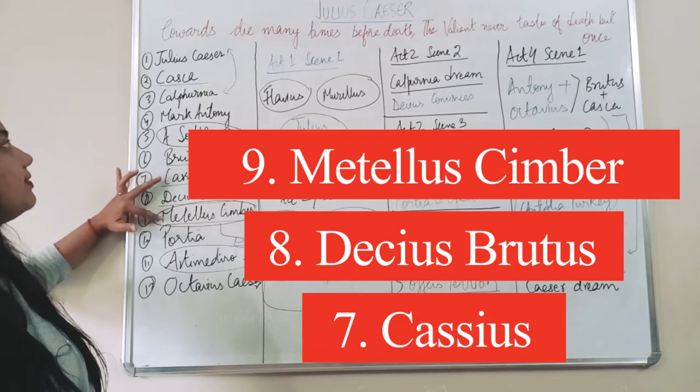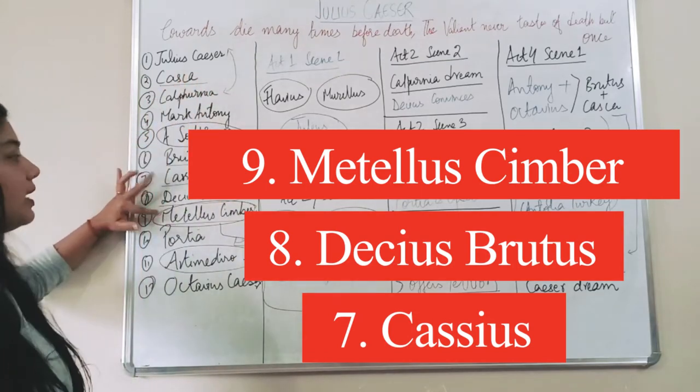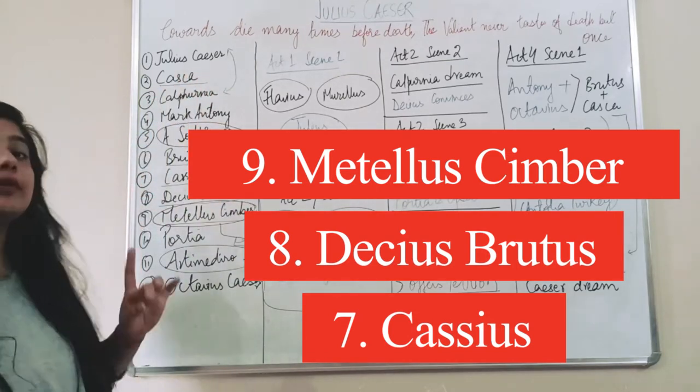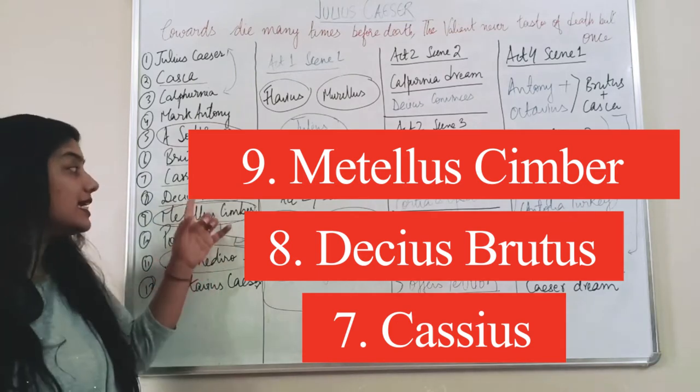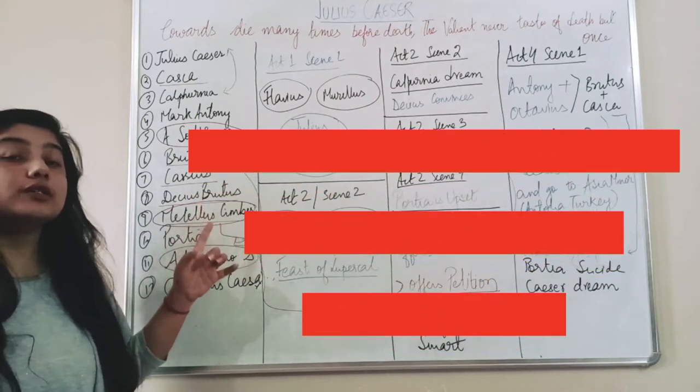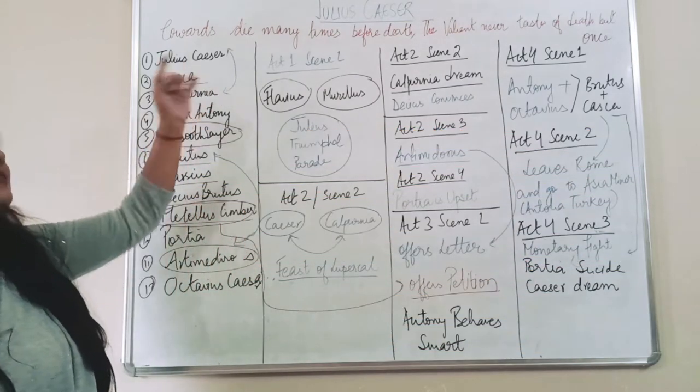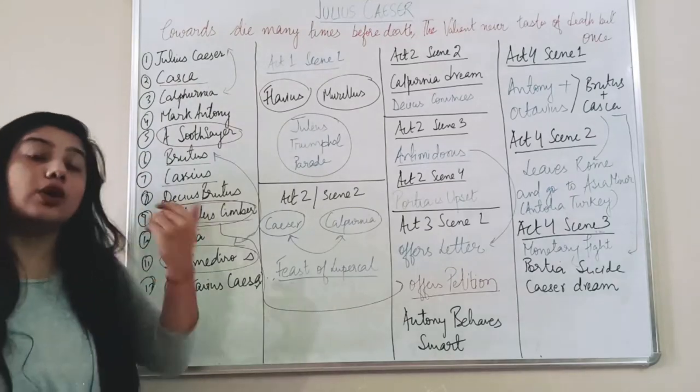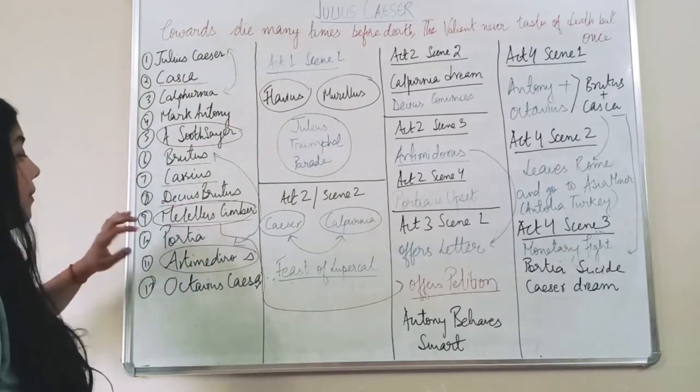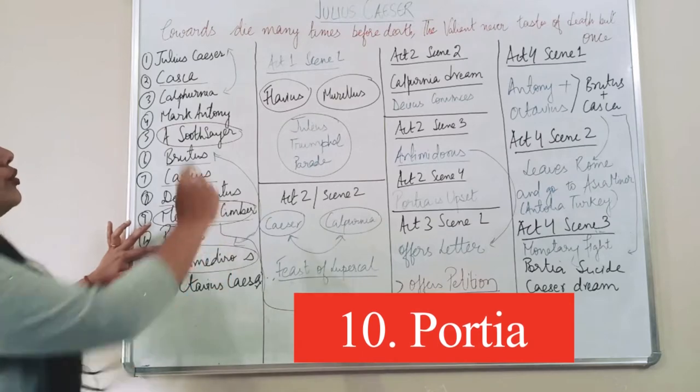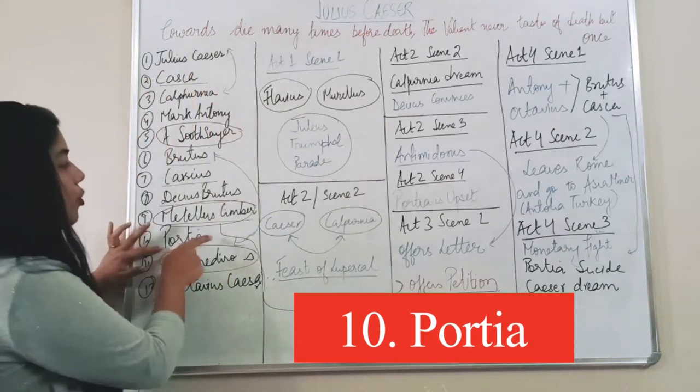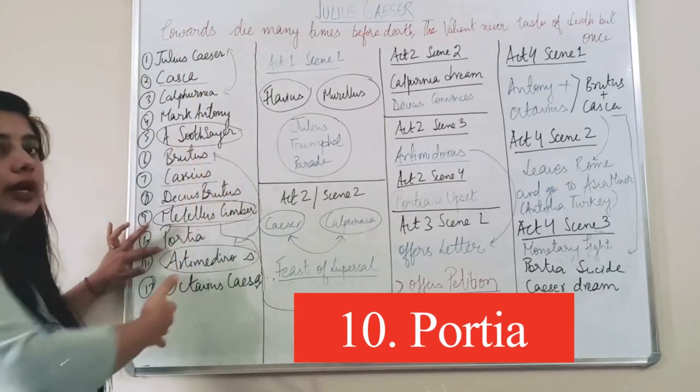Cassius, Metellus Cimber, they were with Casca, they were in a team. Decius Brutus also plays a very important role because he was the one who was majorly involved in Caesar's murder. How he was involved we will see. Portia, now again you can see I told you the blue arrow is for couple, so Portia and Brutus, they are husband and wife.